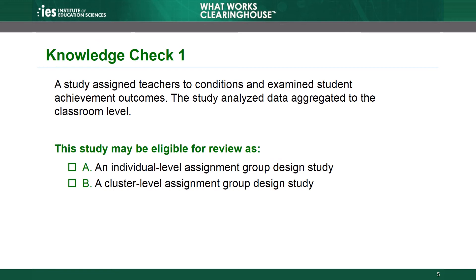Knowledge Check 1: A study assigns teachers to conditions and examines student achievement outcomes. The study analyzed data aggregated to the classroom level. This study may be eligible for review as: A. An individual-level assignment group design study, or B. A cluster-level assignment group design study. The answer is B. By assigning teachers to conditions, the study also assigns each teacher's students to conditions as a group. Additionally, the data for the analysis are based on students within clusters, so the study meets both eligibility criteria for a cluster study.